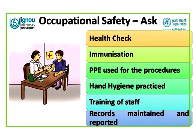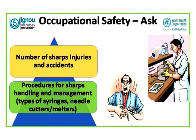We must ask whether health check-ups are done, immunization is given to all staff, PPE is readily available and clean, hand hygiene is practiced, staff are adequately trained, and records are maintained and reported. We must also ask whether there have been any accidents or sharp injuries in the past year, how they are managed and reported, and whether there is follow-up action. We also need to know procedures for sharp handling, spill management, and post-exposure prophylaxis.